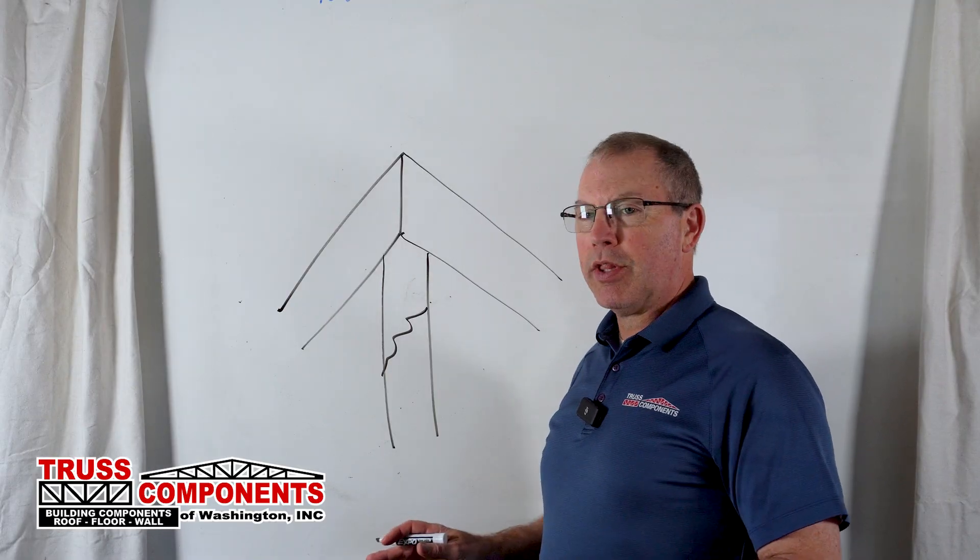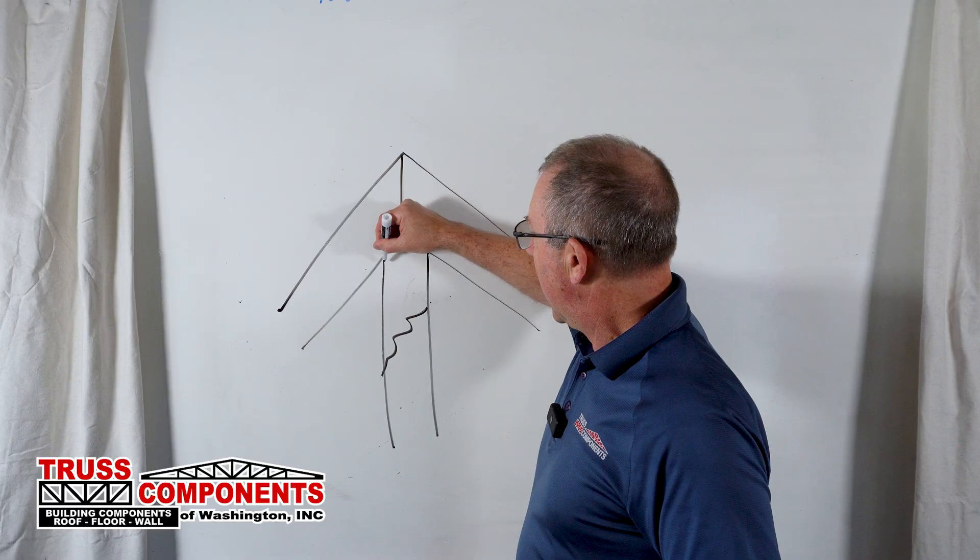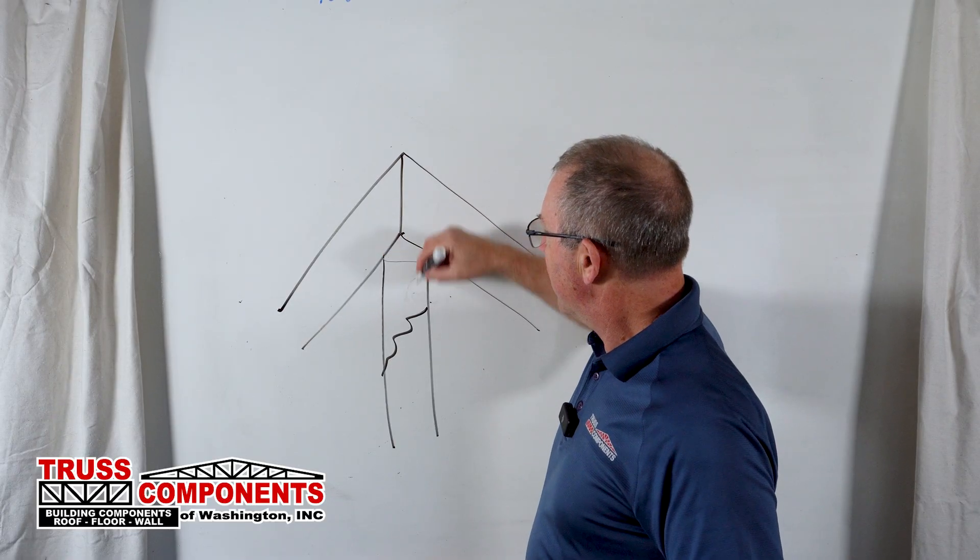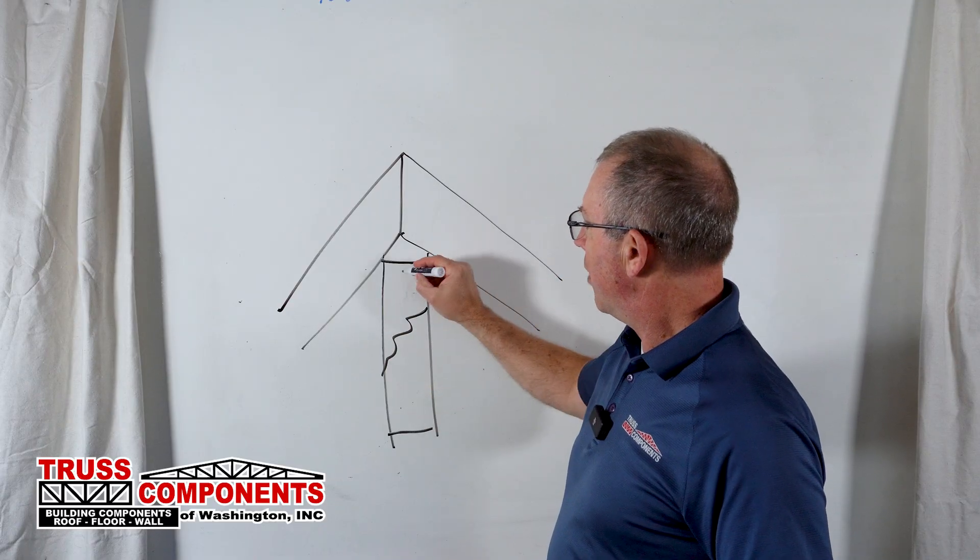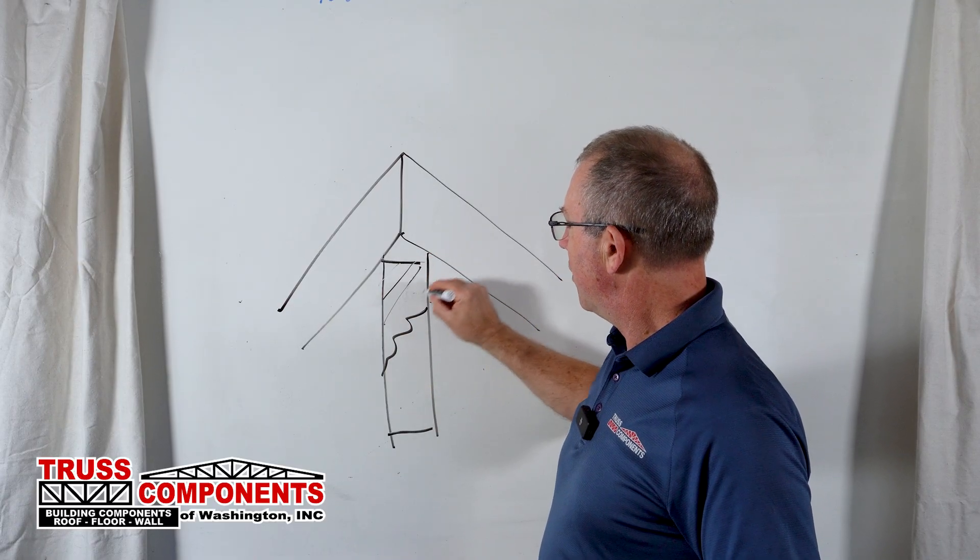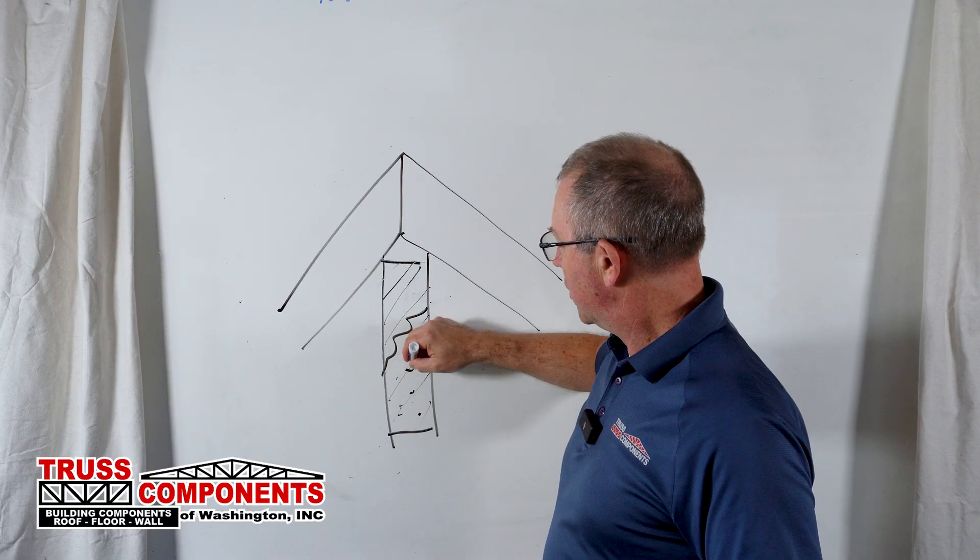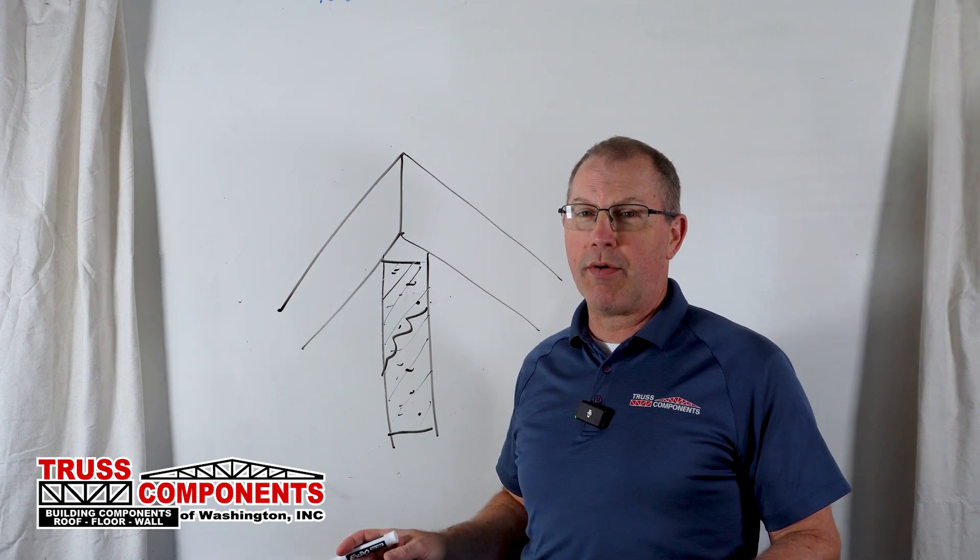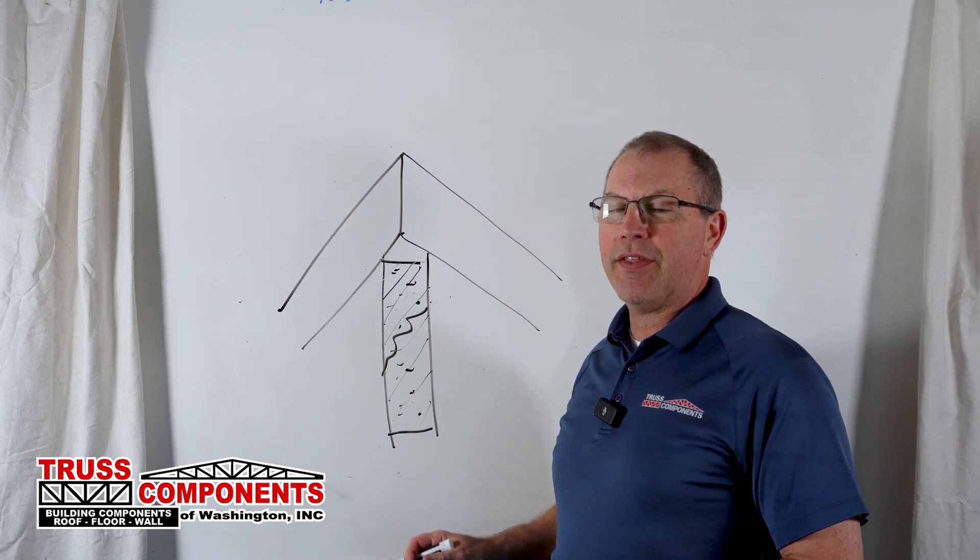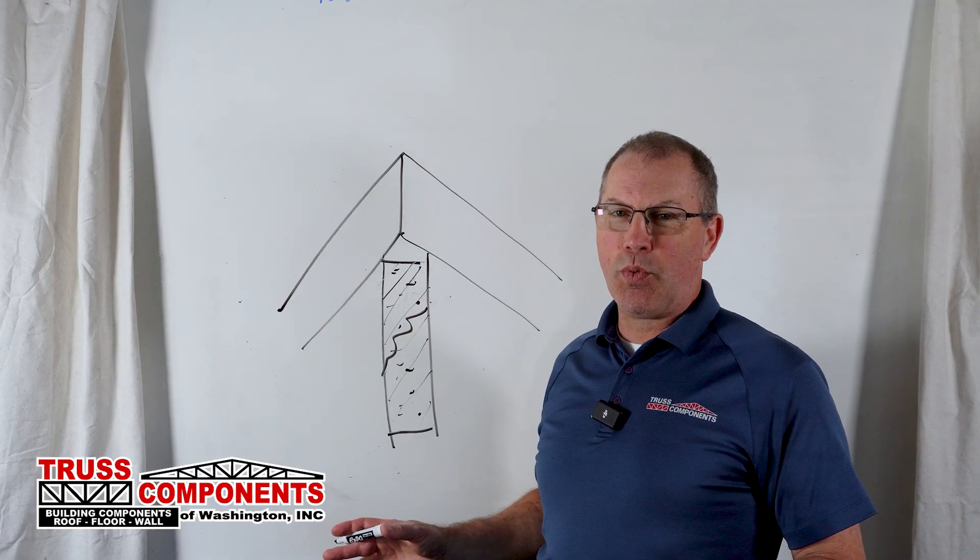So typically, in this case, an engineer will specify what we call a scab repair, and that's where we put another piece of lumber on both sides of that broken member, and it gets nailed on per the engineer's instructions. That will bring the truss back to its original strength and maintain the warranty.